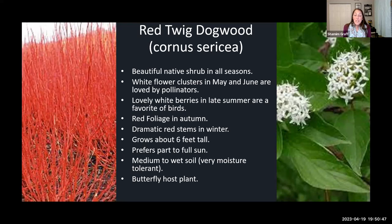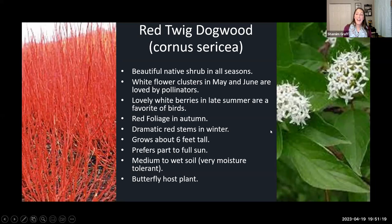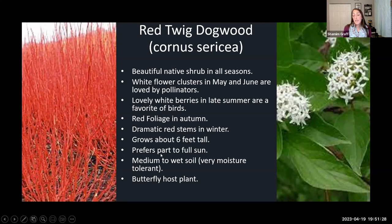Moving into shrubs: red twig dogwood has it all. Look at those gorgeous red stems through autumn and into winter — plus white flowers that pollinators love, and berries later in the season. It grows about six feet tall and needs a spot like a corner of your house or a focal garden. It likes part to full sun and medium to wet soil, can really deal with wetter areas, and is a butterfly host plant.